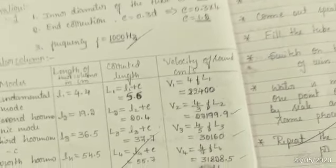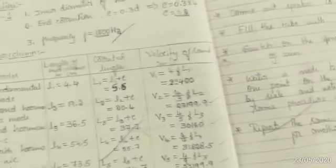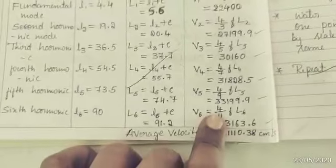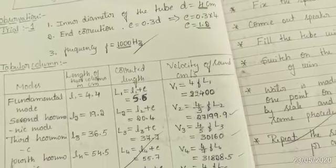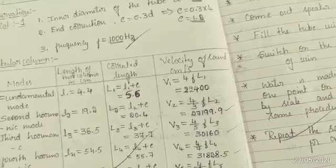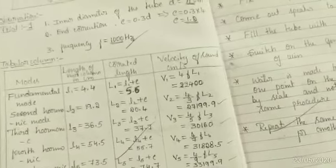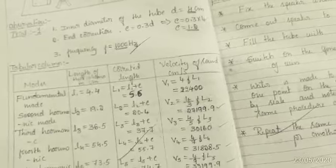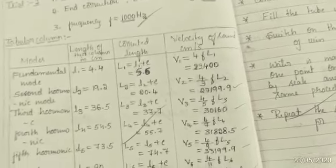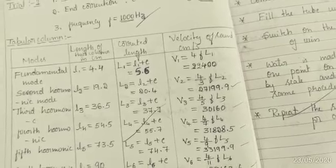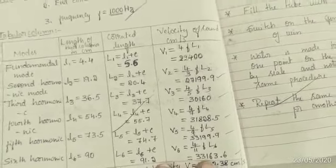V4 is equal to 31,828.5. V5 is equal to 4 by 9 F L5, equal to 33,199.9. V6 is equal to 4 by 11 F L6, that is, 33,163.6.